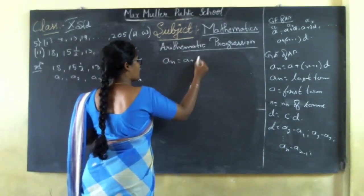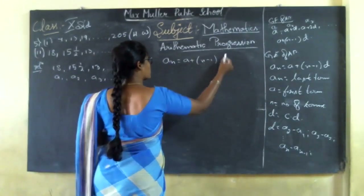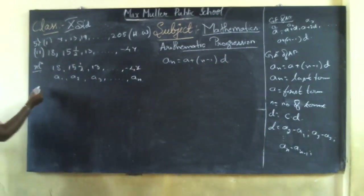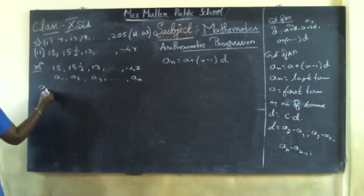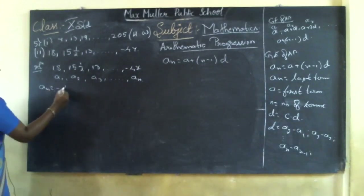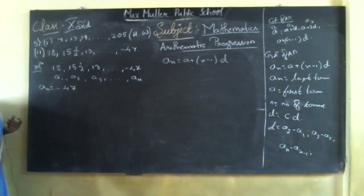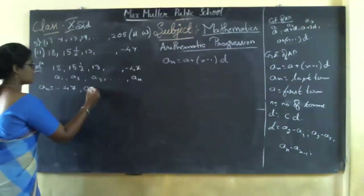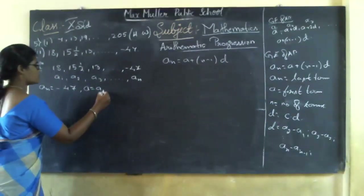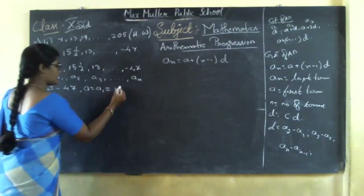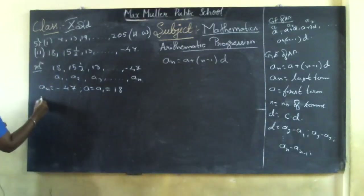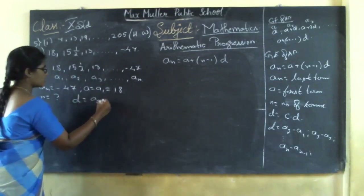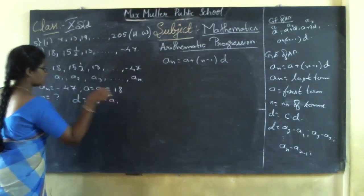Looking at the formula, what are you going to write? An value is given — it is minus 47. A, also called a1, is equal to 18. The n value we do not know. For common difference, we know the formula: d = a2 − a1. Here a2 is in mixed fraction form, so we are going to convert it to proper form.